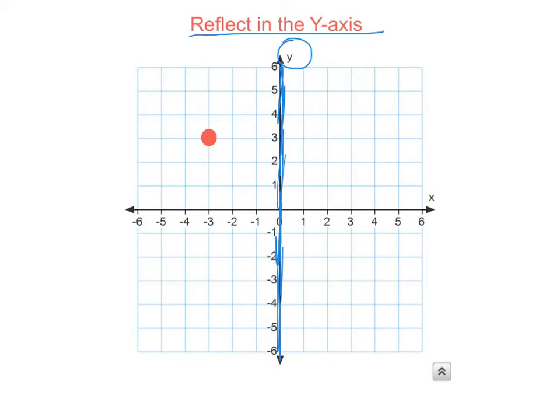We figure out how far our point is from the line by counting steps: 1, 2, 3. We keep going the same distance on the other side: 1, 2, 3. And that gets us our new point.